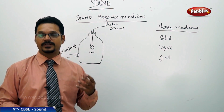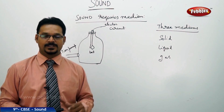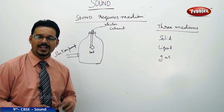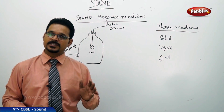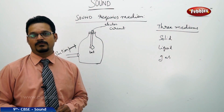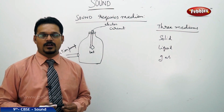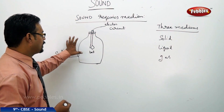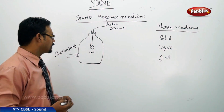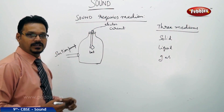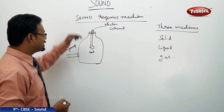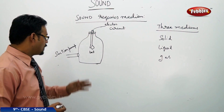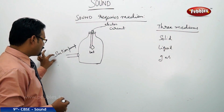Before going to that, let us establish that sound requires a medium. As mentioned earlier, sound doesn't travel in a vacuum. To prove this, let us take a small experiment: a jar filled with air, inside which an electric bell is connected to an electric circuit. One side of the jar is connected to a suction pump.